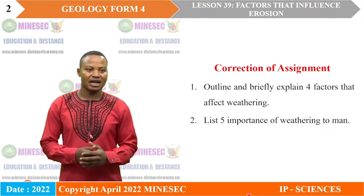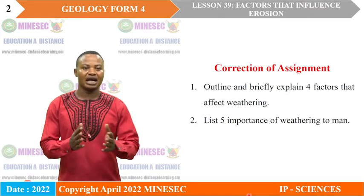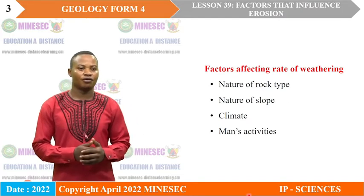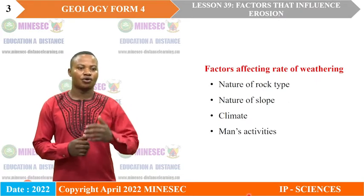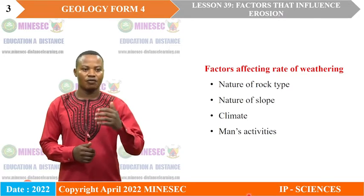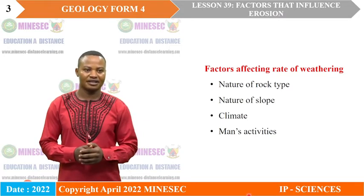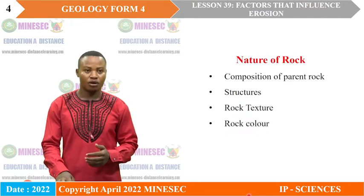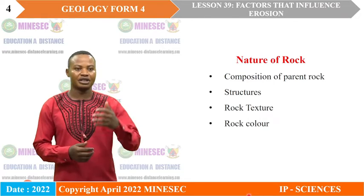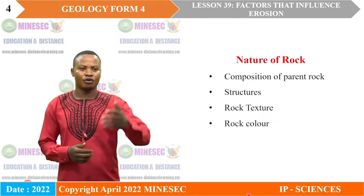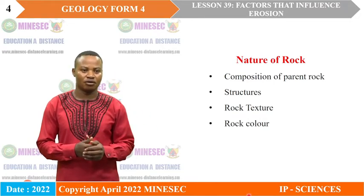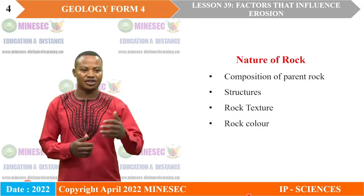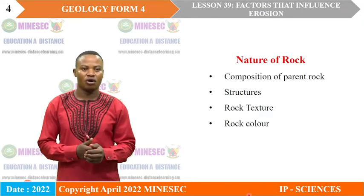To correctly answer these questions, we start by bringing out the factors that affect weathering: nature of rock type, nature of slope, climate, and man's activities. The nature of rock type affects the rate of weathering through: composition of the parent rock, structures found in the parent rock, texture of the parent rock, and the color of the rock.